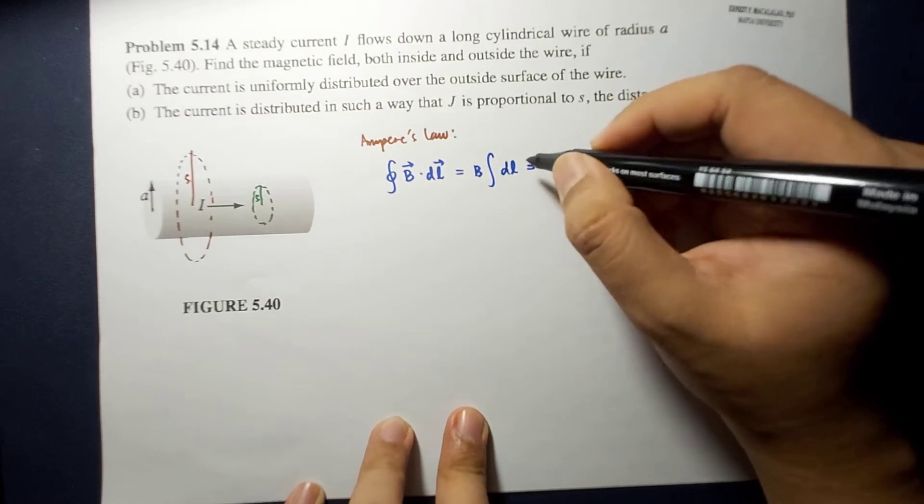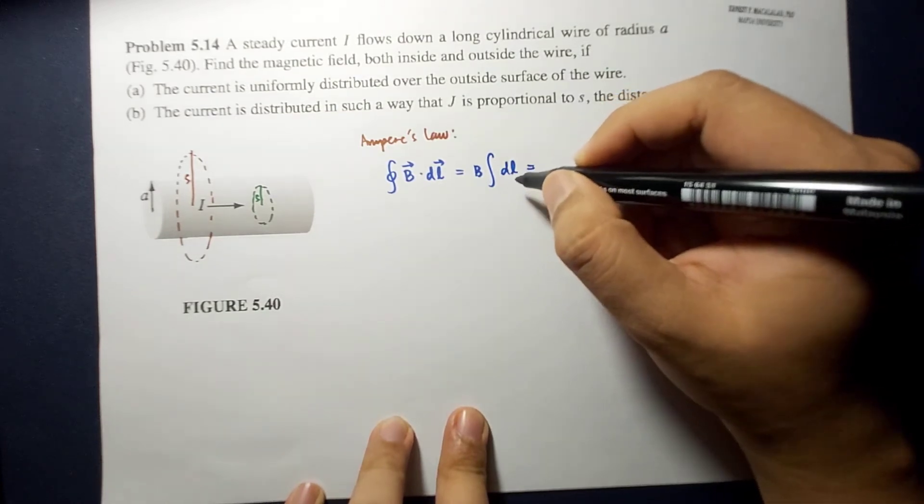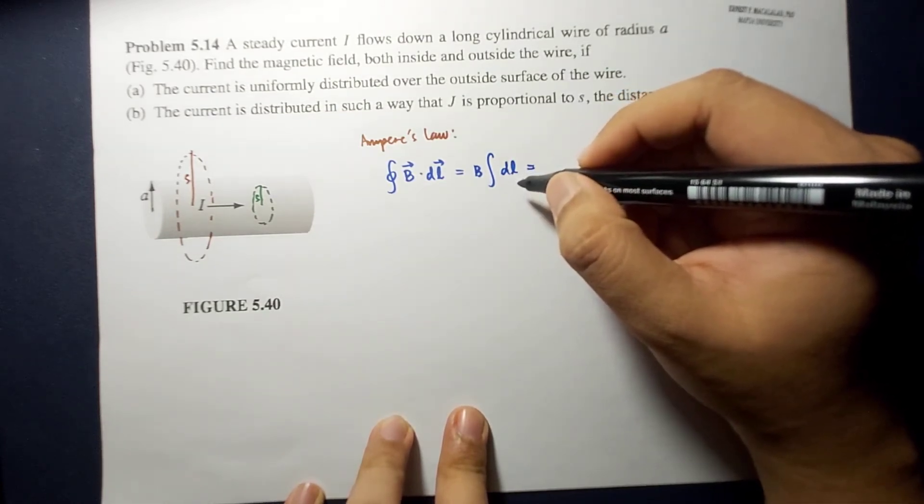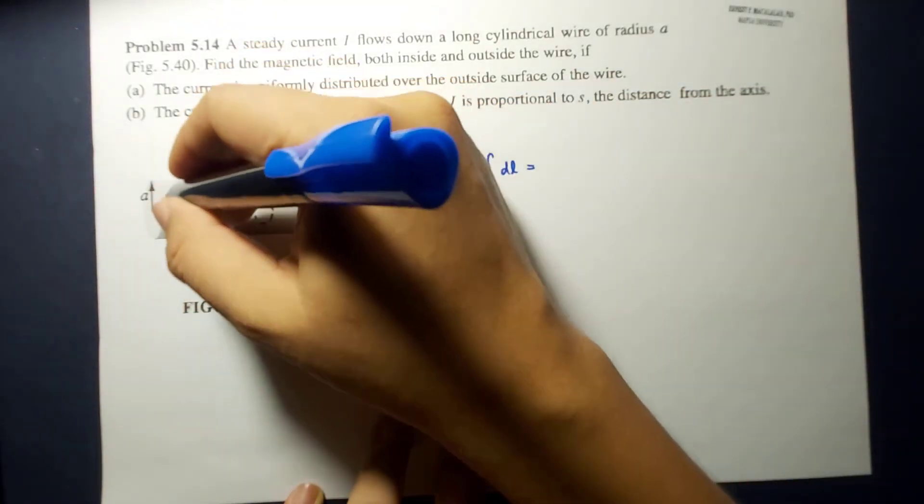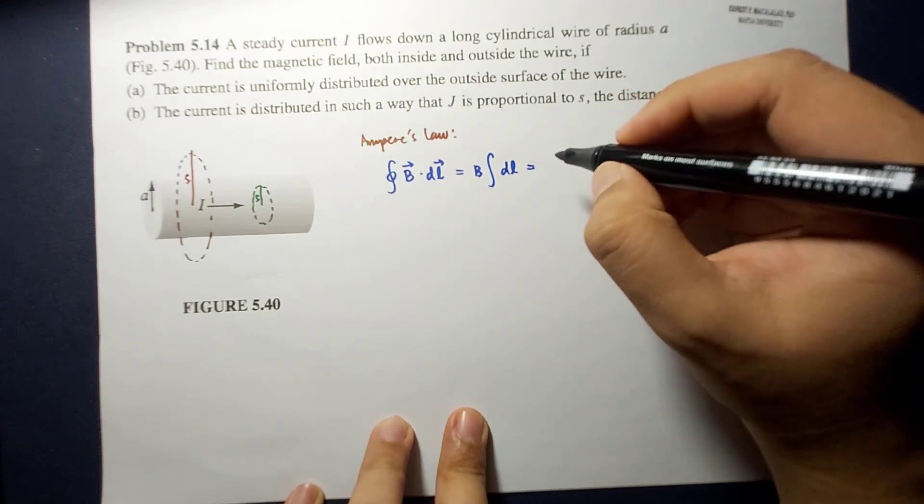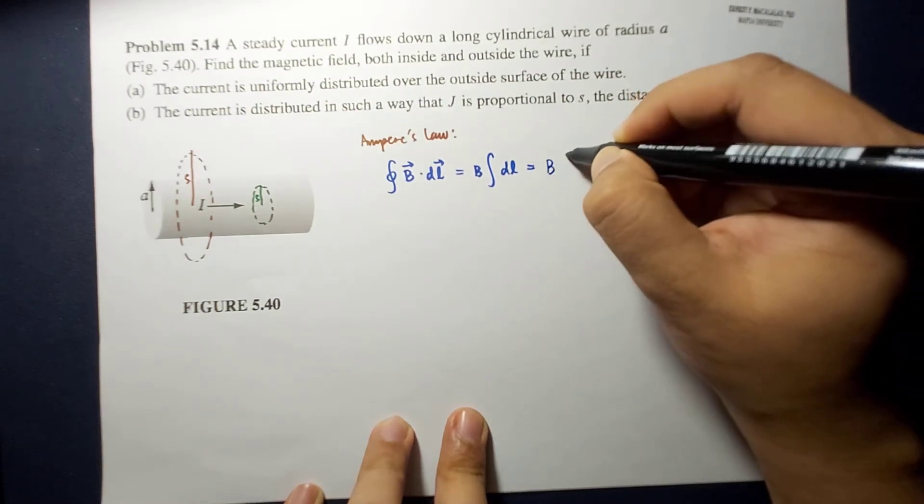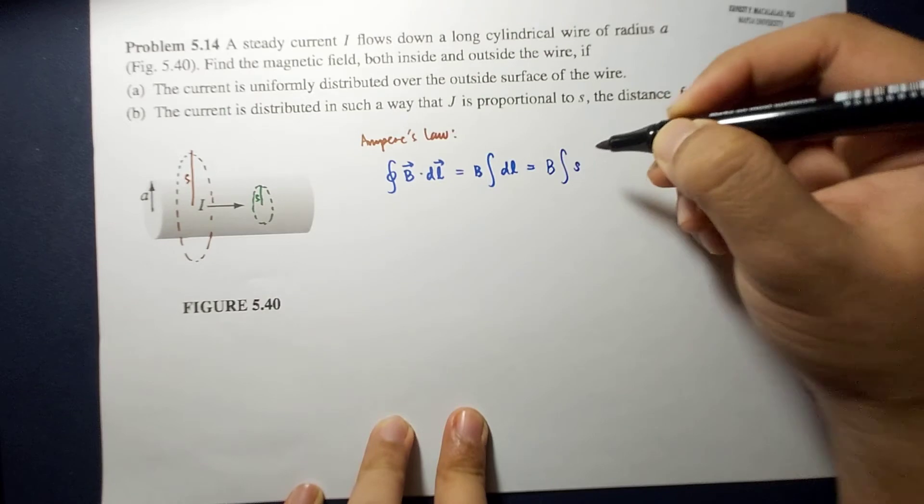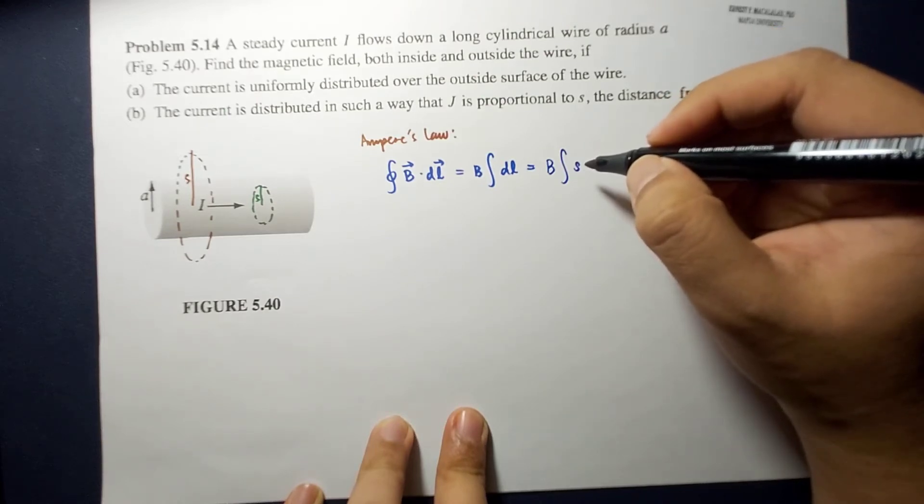so remember that the Dn for a cylindrical coordinate system is given by B times integral of S Dphi.